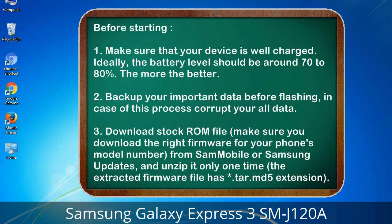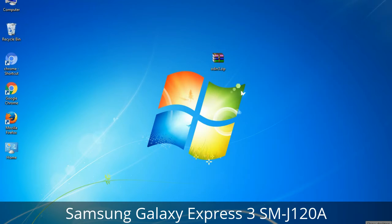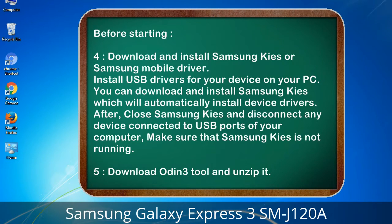3. Download the stock ROM file. Make sure you download the right firmware for your phone's model number from Sammobile or Samsung Updates, and unzip it only one time. The extracted firmware file has a *.tar.md5 extension. 4. Download and install Samsung KIS or Samsung mobile driver to install USB drivers for your device on your PC. Samsung KIS will automatically install device drivers. After, close Samsung KIS and disconnect any device connected to USB ports, making sure Samsung KIS is not running. 5. Download the Odin 3 tool and unzip it.